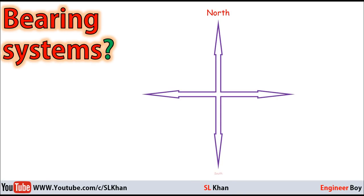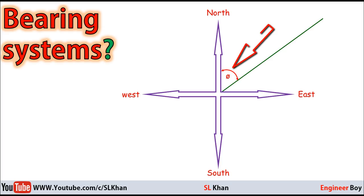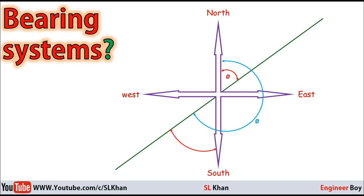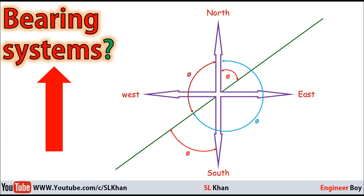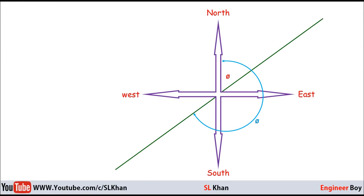Now I hope you know the bearing definition. But why should we learn bearing systems? Let's say there is a line in the first quadrant making an angle with the meridian line — that's straightforward. However, if there is a line in the third quadrant, how should I take the bearing? Should I take it from the north clockwise, from the south clockwise, or from the north anticlockwise? That's a big question, and that's why we need to learn the bearing systems.